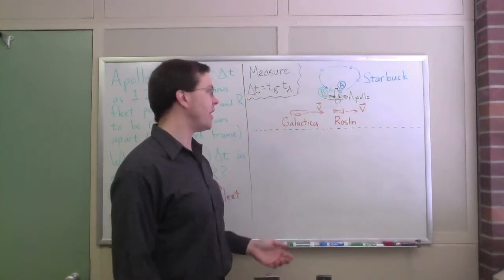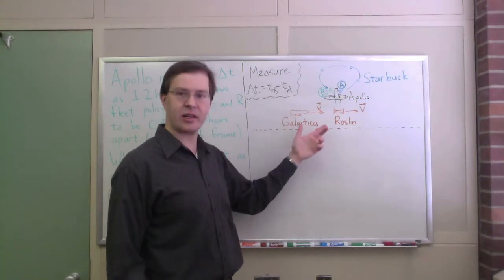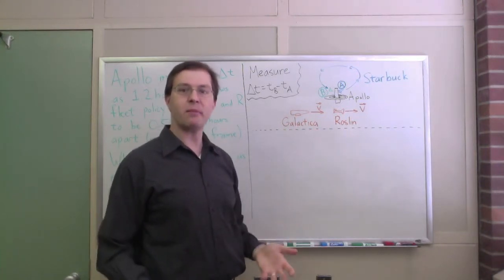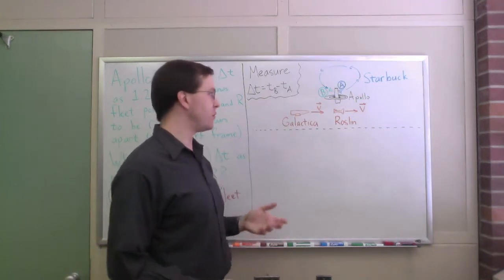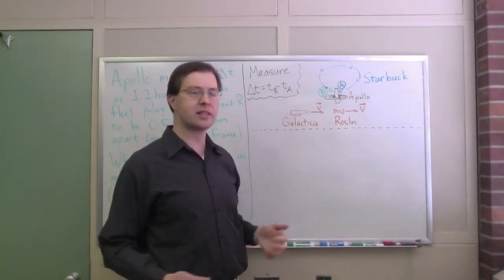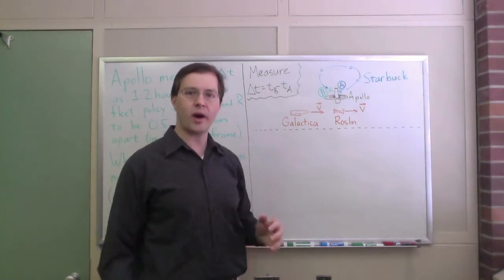We figured out that both Apollo and the team of the Galactica and Roslin and the fleet each measured coordinate time intervals between events A and event B. So what I want to do, I want to solve a quantitative question now.